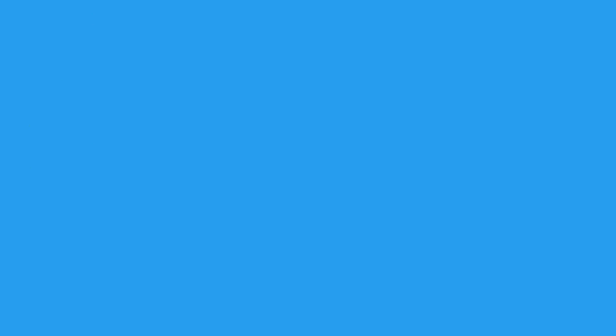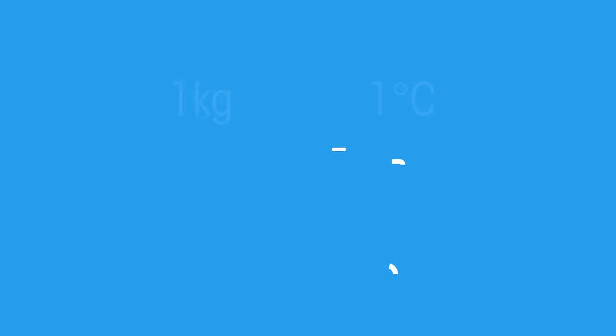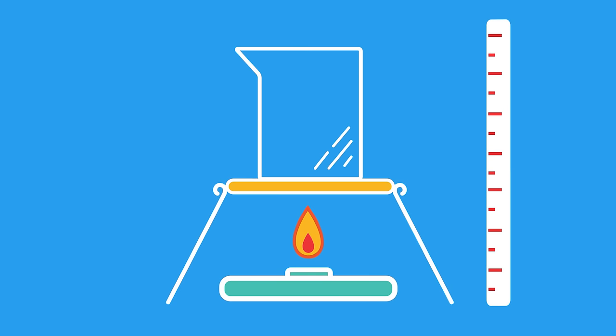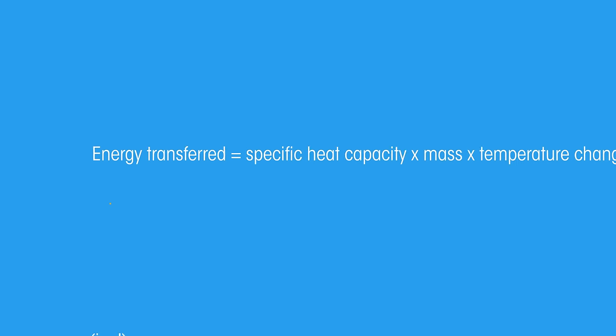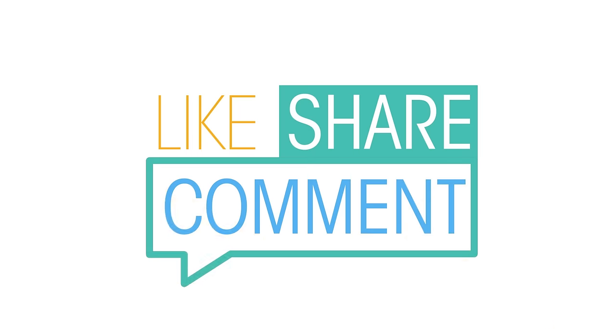So there you have it. To summarize, specific heat capacity is the amount of energy needed to raise 1 kilogram of the substance by 1 degree Celsius. It's helpful because it allows us to work out how much energy we need to heat up or cool down the substance to a desired temperature. To calculate it, use the following equation. Please like and share our videos with your friends. If you have any questions that you want help with, just comment below.